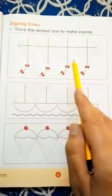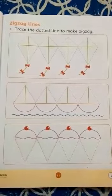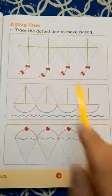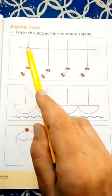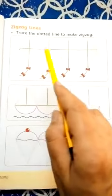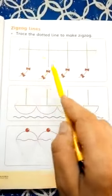Can you see in the first picture? We will make different lines. It will give shape of a kite, and we will trace zigzag lines. These are zigzag lines.